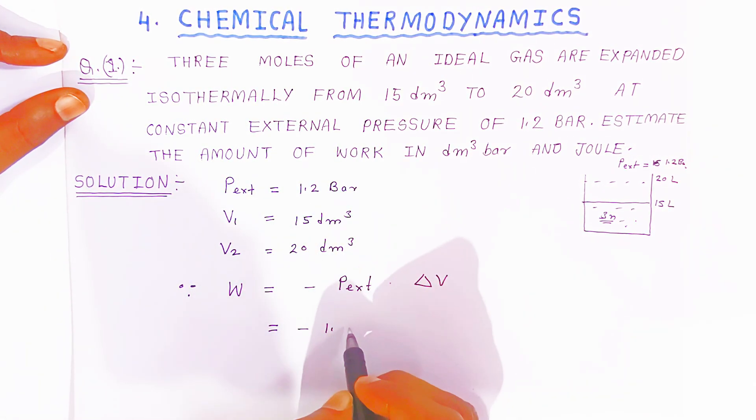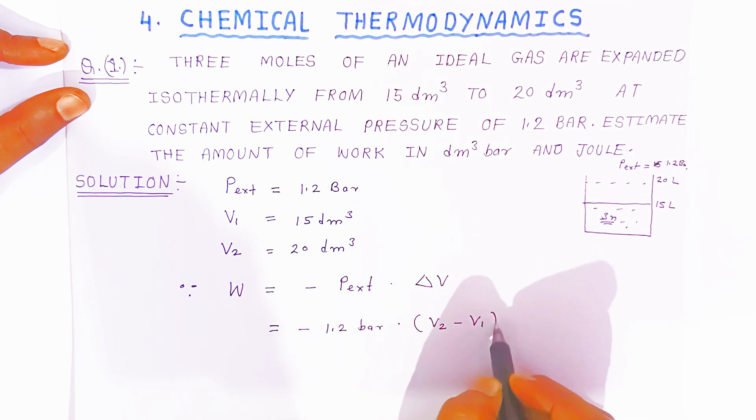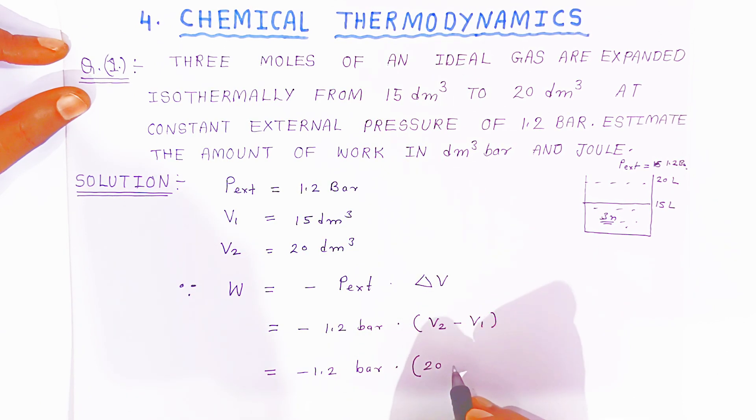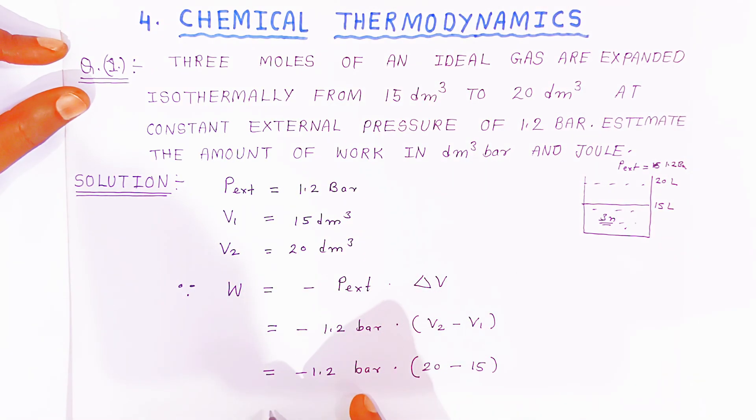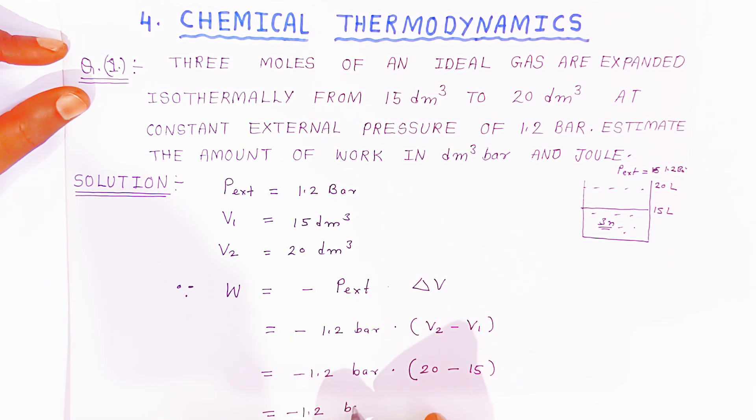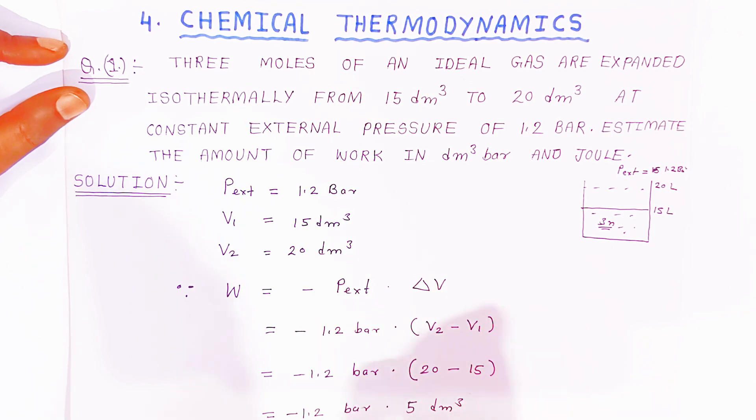So you have to just put the value students. So it will be 1.2 bar. Now here students delta V is nothing but V₂ minus V₁. Now put the value students, 1.2 bar into 20 minus 15, 5 dm³. So you will get 1.2 bar into 5 dm³.